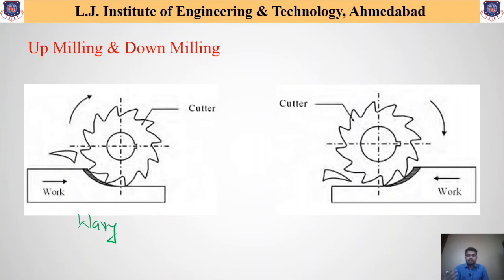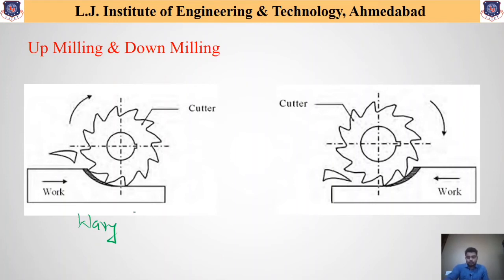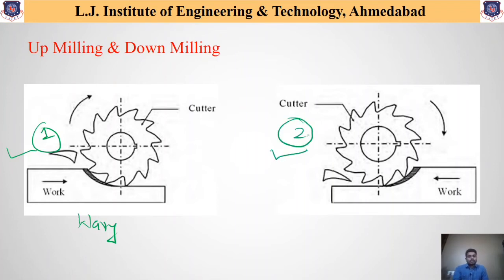These are the different aspects of up milling and down milling. Up milling and down milling are also known as conventional milling and climb milling respectively. This topic is very important from an exam point of view, as questions may ask you to differentiate between up milling and down milling, or explain either process in detail. For this, you just need to draw the respective figures and write out the different points discussed during this session.